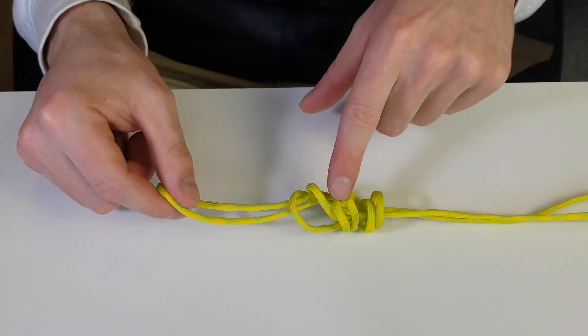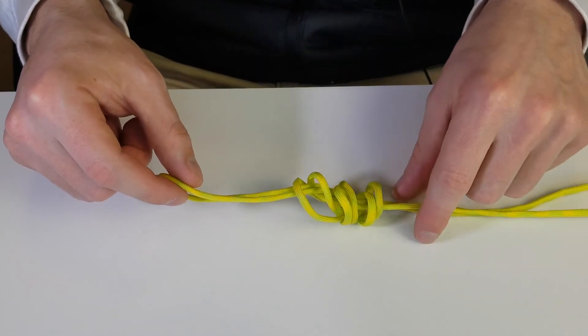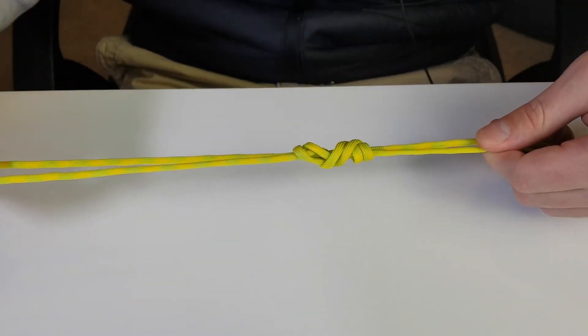And then what I like to do is wet this with either some water or spit, it'll secure it a bit better. But all you got to do now is grab your loop and grab your two lines and slowly start pulling them together.